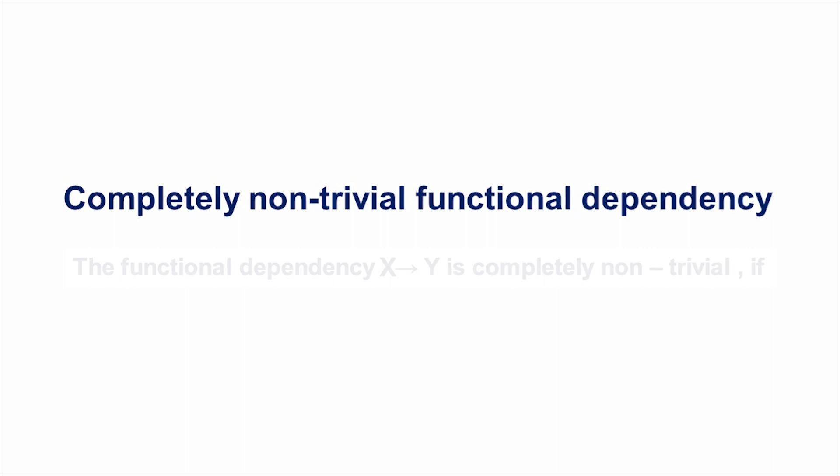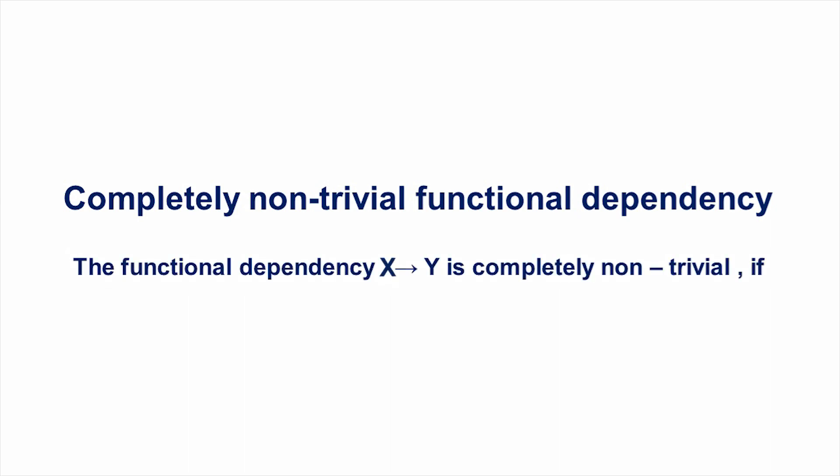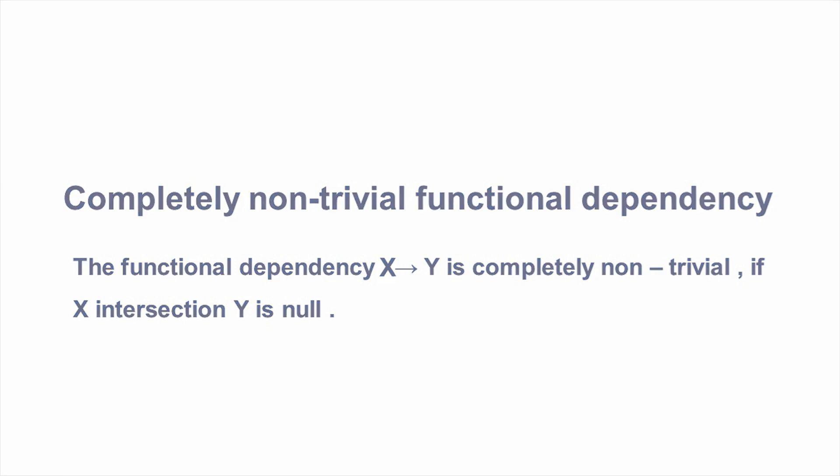Next is completely non-trivial functional dependency. The functional dependency X determines Y is completely non-trivial if X intersect Y is null. That means the determinant and the dependent have no common attributes.